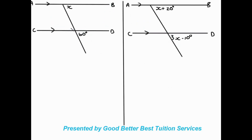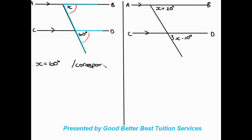Moving on to the next example, we try to find x and identify the shape. I can see there's an F here, and what do we know about the F? Those are corresponding angles. Corresponding angles are equal to each other. These are the corresponding angles underneath the parallel lines, so we say x is equal to 60 degrees. The reason is corresponding angles, and AB is parallel to CD. Just like that we have our answer.